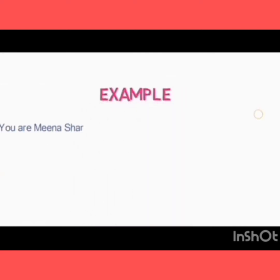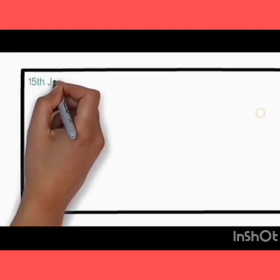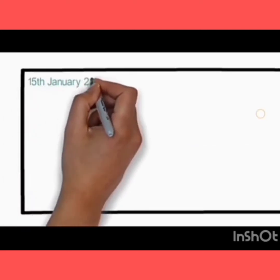Let's take an example: you are Meena Sharma, and you recently had a chance to encounter an old school friend in the marketplace. Record your feelings about it in your diary. So what you have to do is write using the same format — first write the date: 15th January 2021.